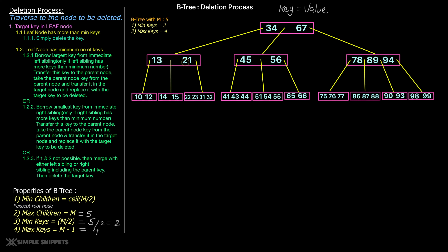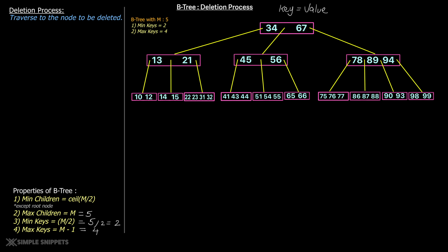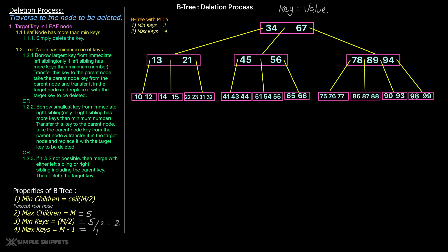When deleting a particular key from this B-tree, there are two main use cases. The first is when the target key is in the leaf node, and the second is when the target key is in an internal node. Leaf nodes are at the very end with no children, and every other node is an internal node.